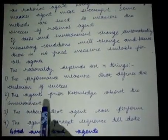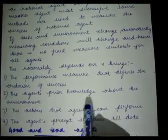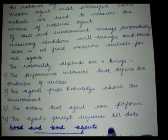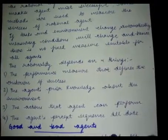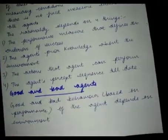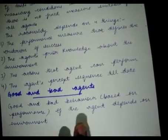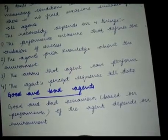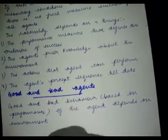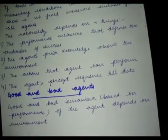Rationality depends on four major things: the performance measure that defines the criterion of success, the agent's prior knowledge about the environment, the actions that the agent can perform, and the agent's percept sequence to date, as it affects the agent's experience of its environment. Good and bad agent behavior is based on its environmental effects — that is, we judge whether an agent is good or bad based on its performance.